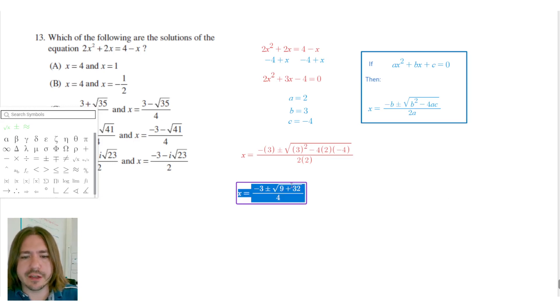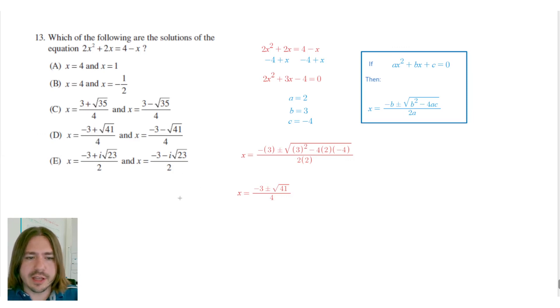So the last thing to simplify here would be 9 plus 32, which is going to be 41. And that's going to be it for this one. That's our answer. Negative 3 plus or minus root 41 over 4. We can't reduce or simplify this root 41 at all because it has no perfect square factors.